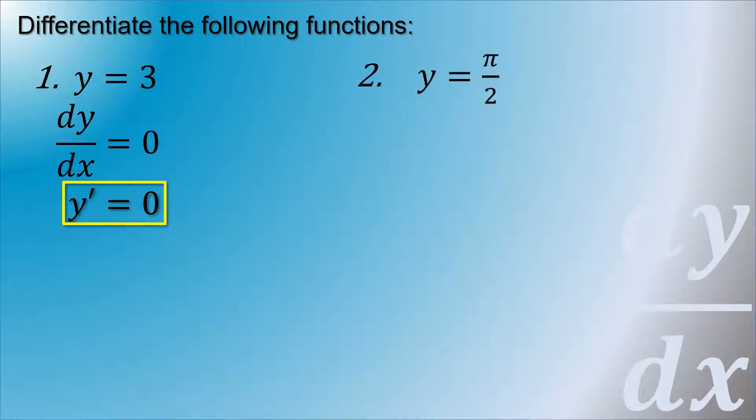Second example: y is equal to π over 2. Since π is a constant, the derivative is equal to 0 as well.